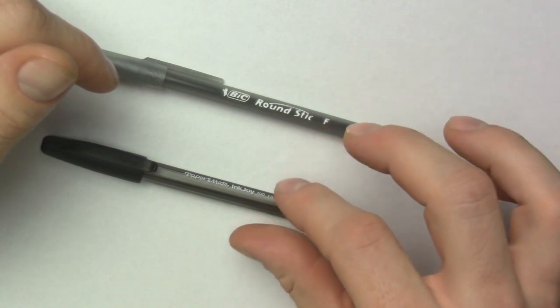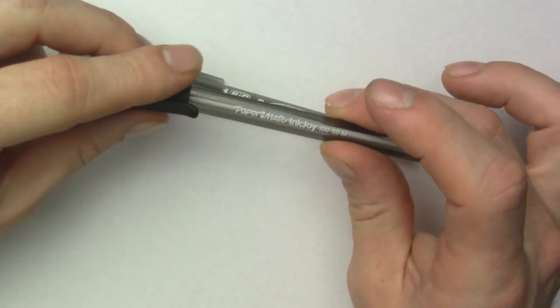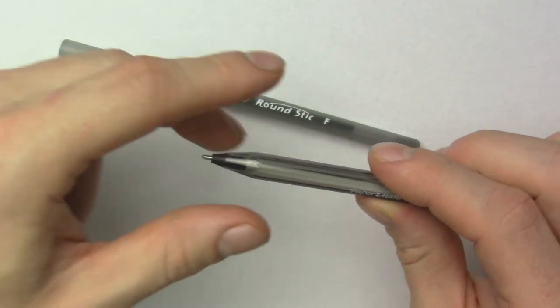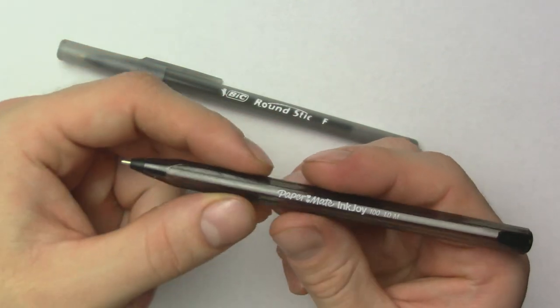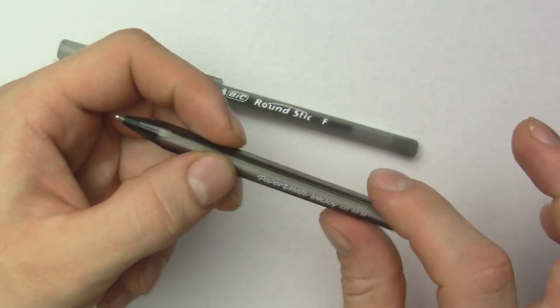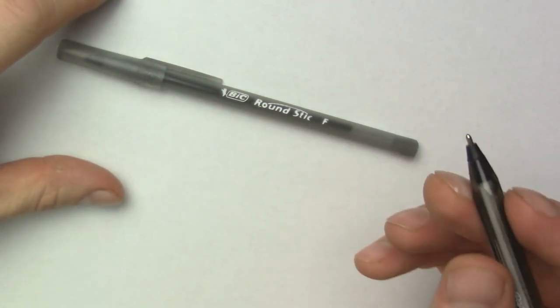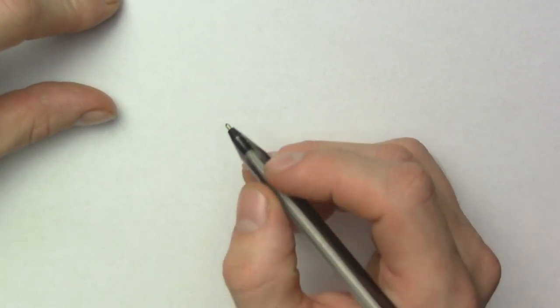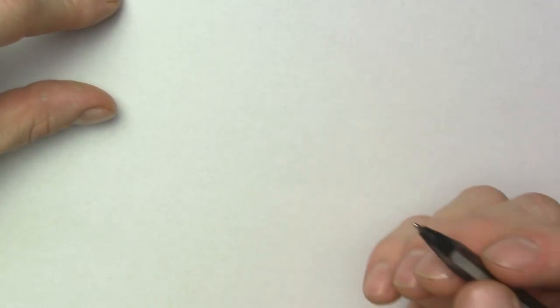So the first pen we will talk about is the Papermate InkJoy. This pen has a tripod grip, these come in different colors as well. There's more colors with the Papermate InkJoy. The writing experience is pretty smooth as I can show you here, and the tripod grip is good for beginners and people that are wanting to improve their drawing and they're just starting out, or for advanced people that just prefer the tripod grip. Personally, I do enjoy the tripod grip which is something I do like about my fountain pen such as the Lamy Safari.